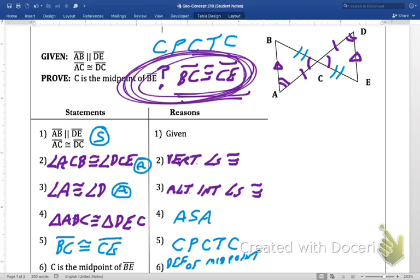C is the midpoint of BE because BC is congruent to CE. They are on the same segment, or they're collinear. Word we haven't used in a while. So, that's the definition of a midpoint then. Alright, there's two proofs for you.